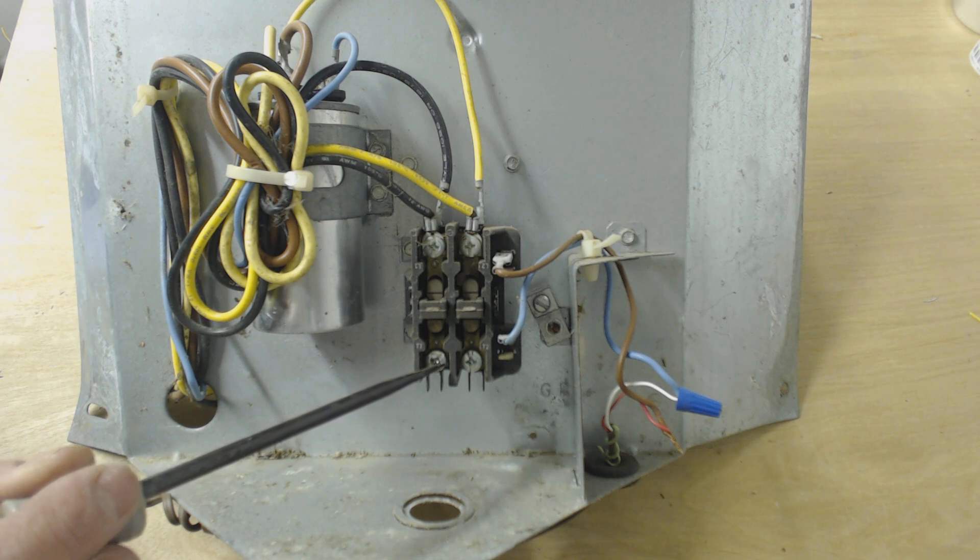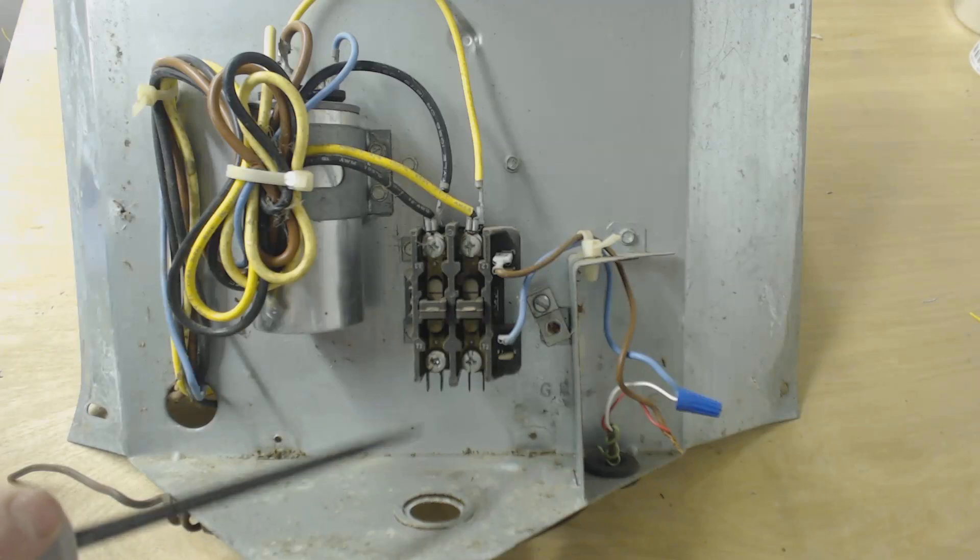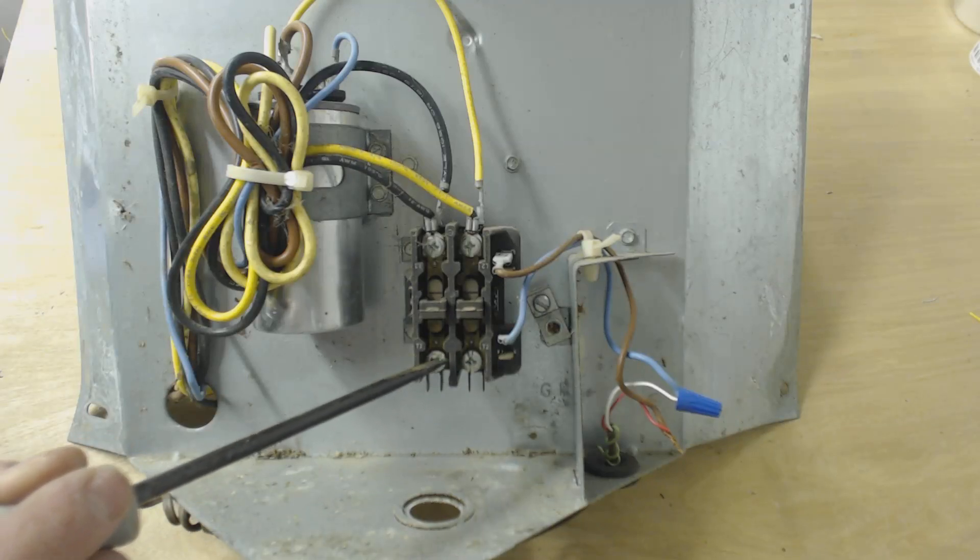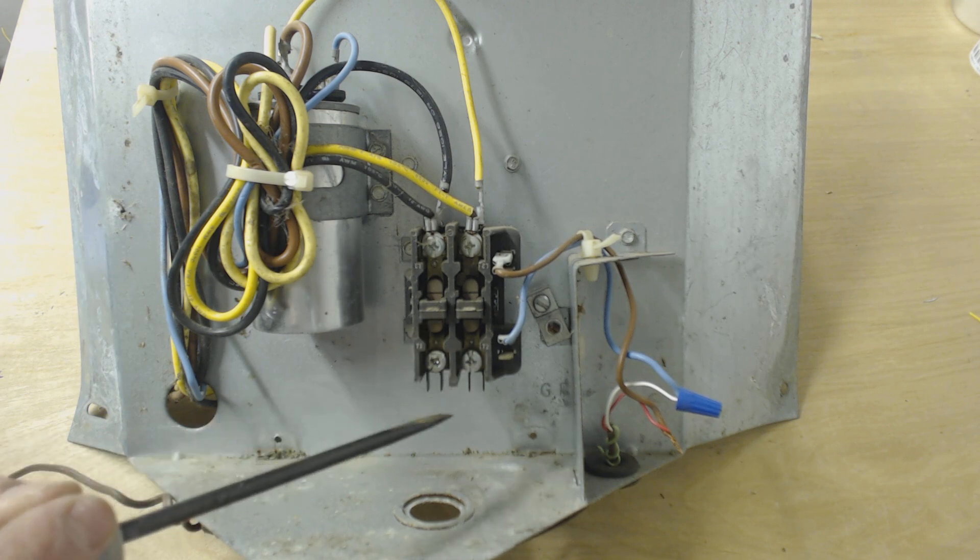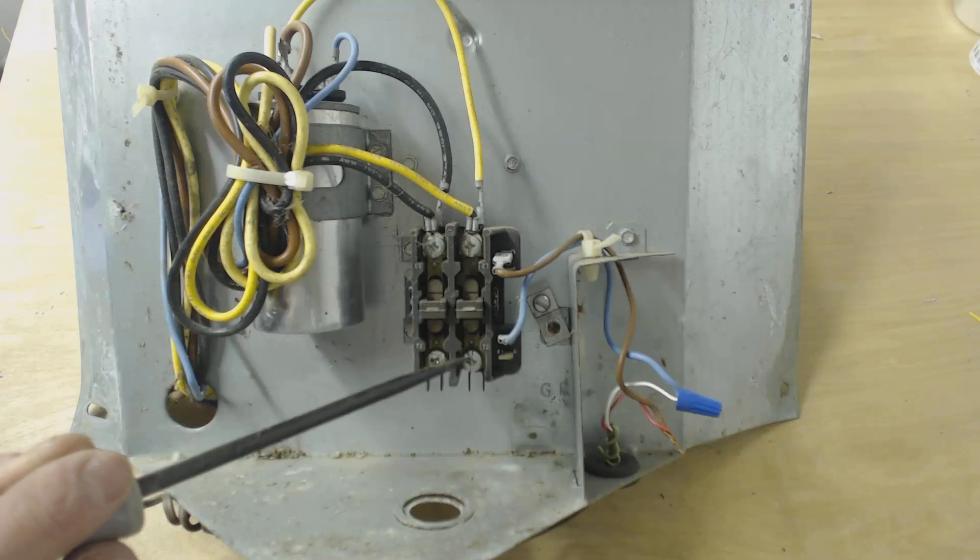It doesn't matter which side you put the hot or the other hot in. So if you have a white and a black wire, it doesn't matter if you put the white here and the black here, or the black here and the white there. Or say you have a black and a red, it does not matter. They're both 120 volt legs.